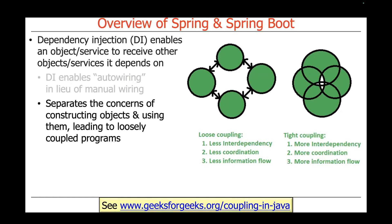Tight coupling means you have a hard time reusing things or understanding them in isolation. Loose coupling makes it easier to figure out what is going on, especially when you understand how to document and understand the patterns of modular code, because you're not tightly coupling things and making them all come together in a big ball of spaghetti.